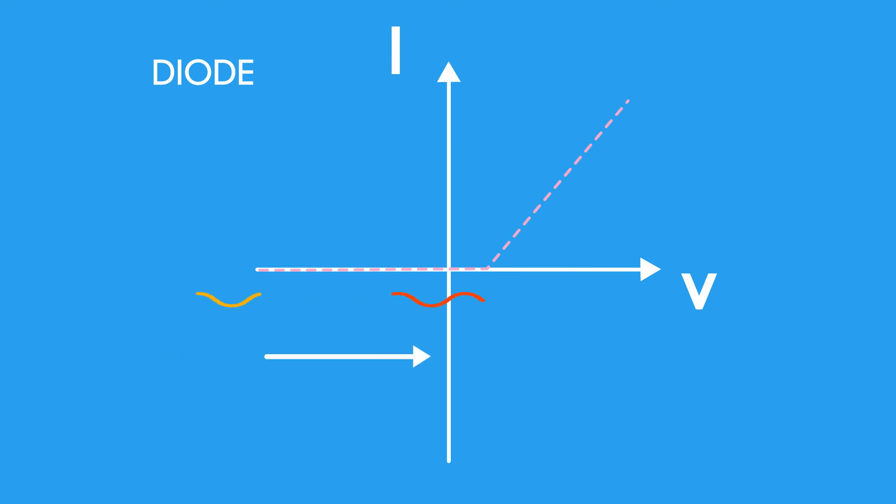In the positive direction, the line is flat until a certain potential difference is reached and then a steep diagonal line upwards is seen.